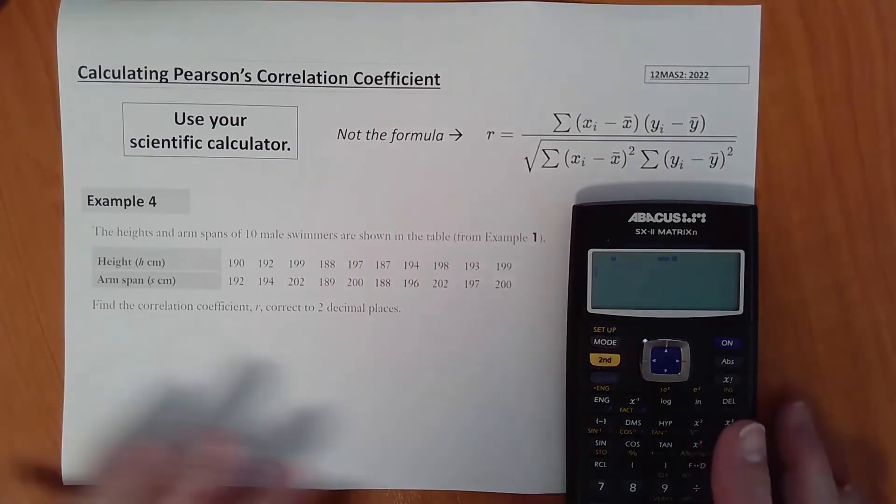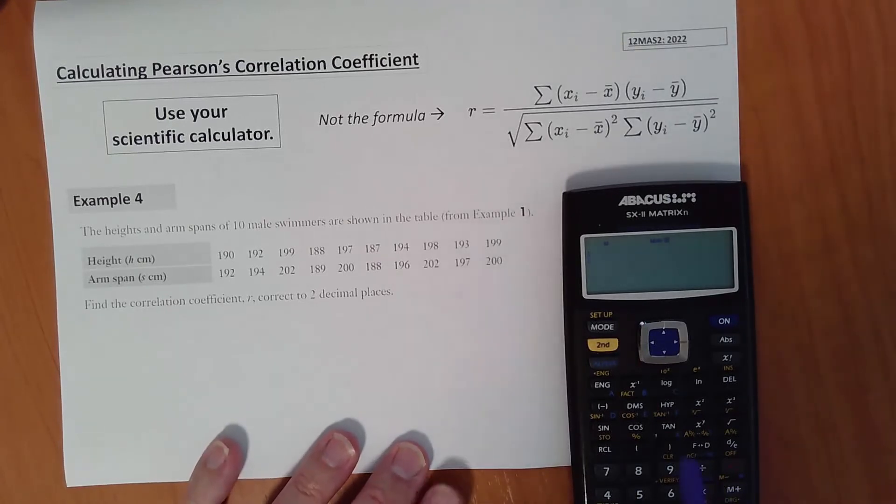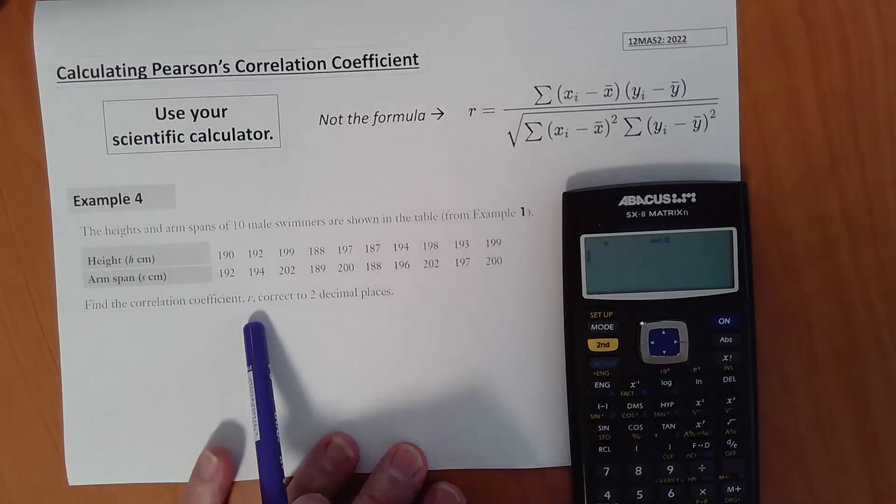What we need to do is essentially use the linear regression function in the statistics mode on the calculator to enter this data and then magically calculate the value of R, Pearson's correlation coefficient.